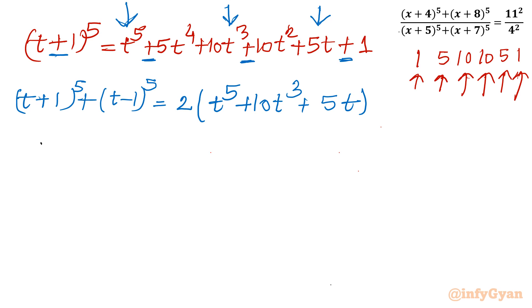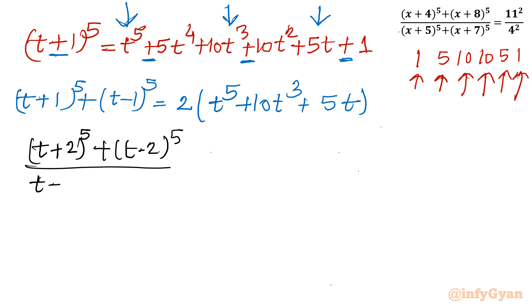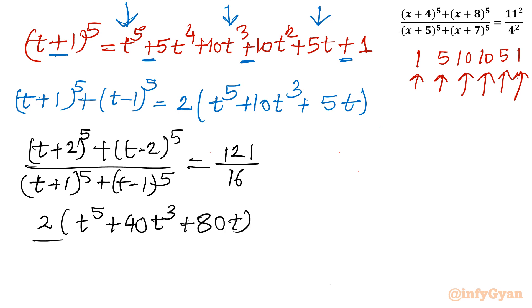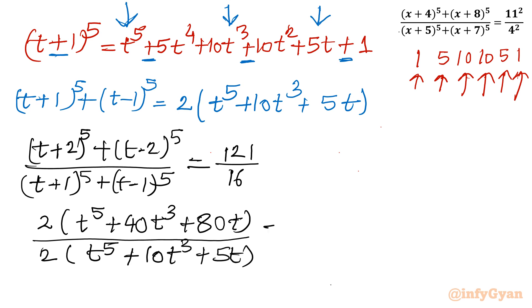Now we write the full expression. The numerator was 2(t^5 + 40t^3 + 80t) and the denominator was 2(t^5 + 10t^3 + 5t), and the right-hand side is 121 over 16. The factor of 2 cancels from both numerator and denominator.